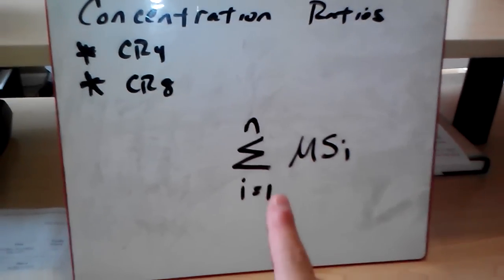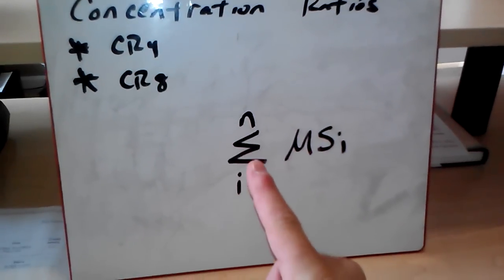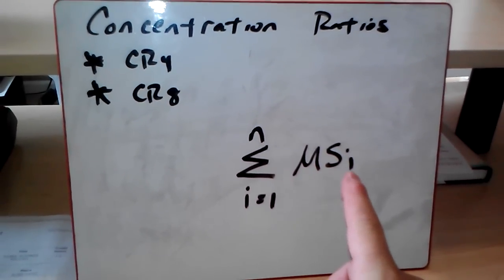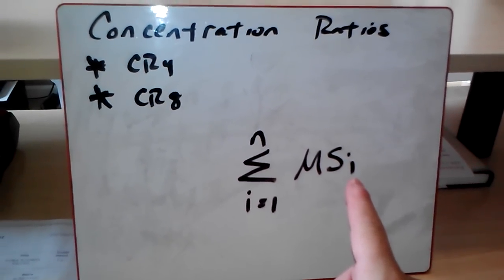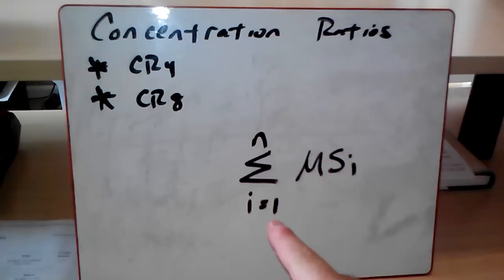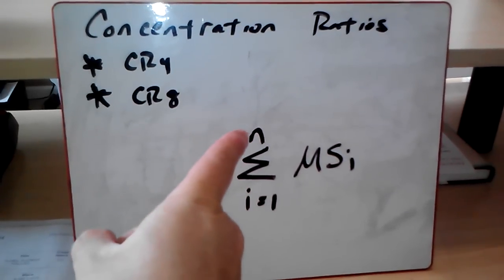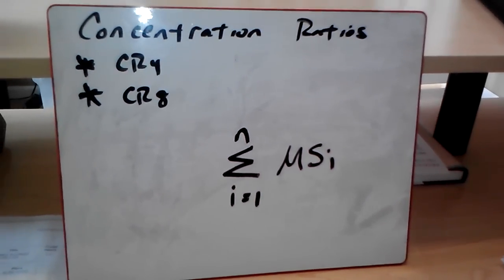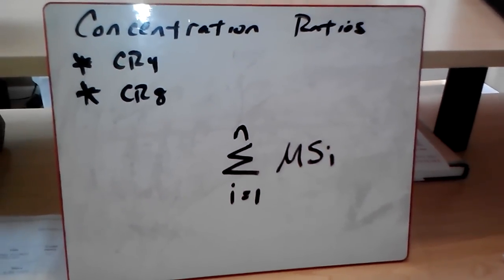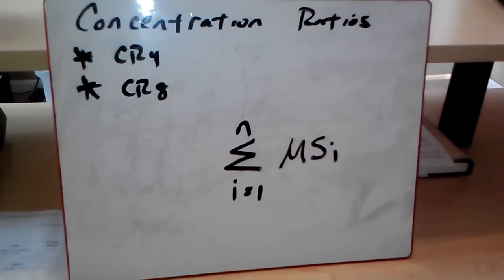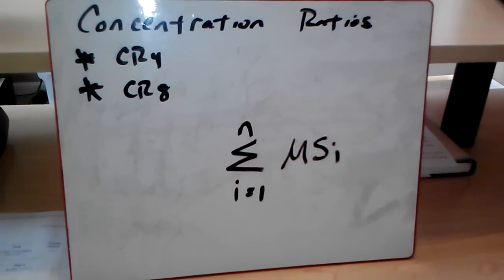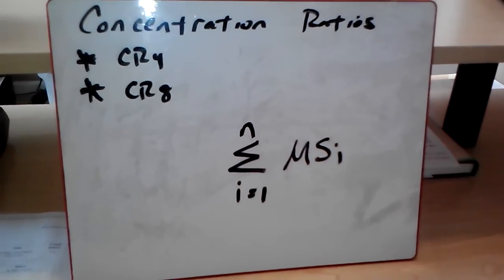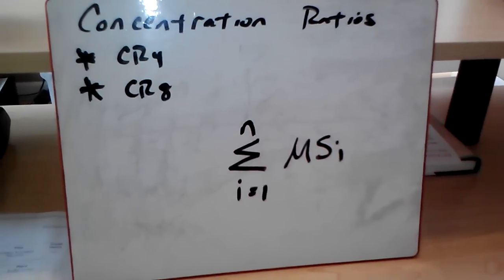Mathematically it looks complicated, but it's not. It's the summation of the market shares of the firms from the first firm to the nth firm. N is going to be determined by the CR level and is going to be either four or eight. So that's basically just saying that we're going to simply sum up the market shares from the first firm to the nth firm.